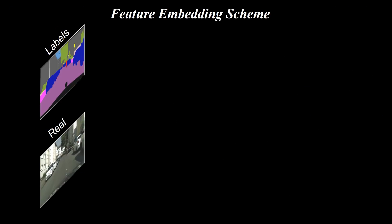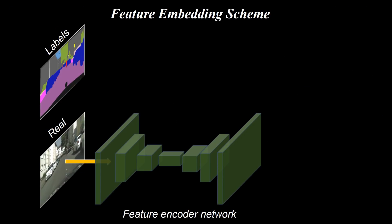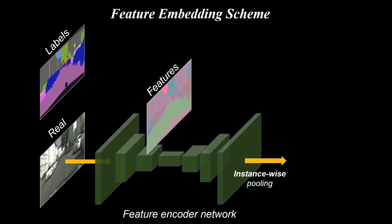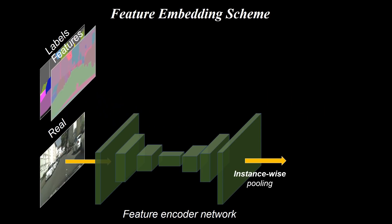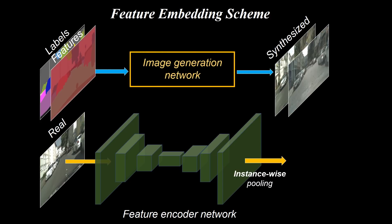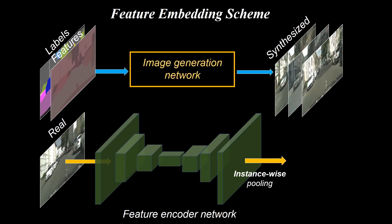To produce diverse outputs, we train an encoder to embed visual features for each object instance in the ground truth image. We then concatenate the features with the label map to synthesize the final image. By manipulating the visual features, we are able to produce different outputs. Please find our code and models on our website.